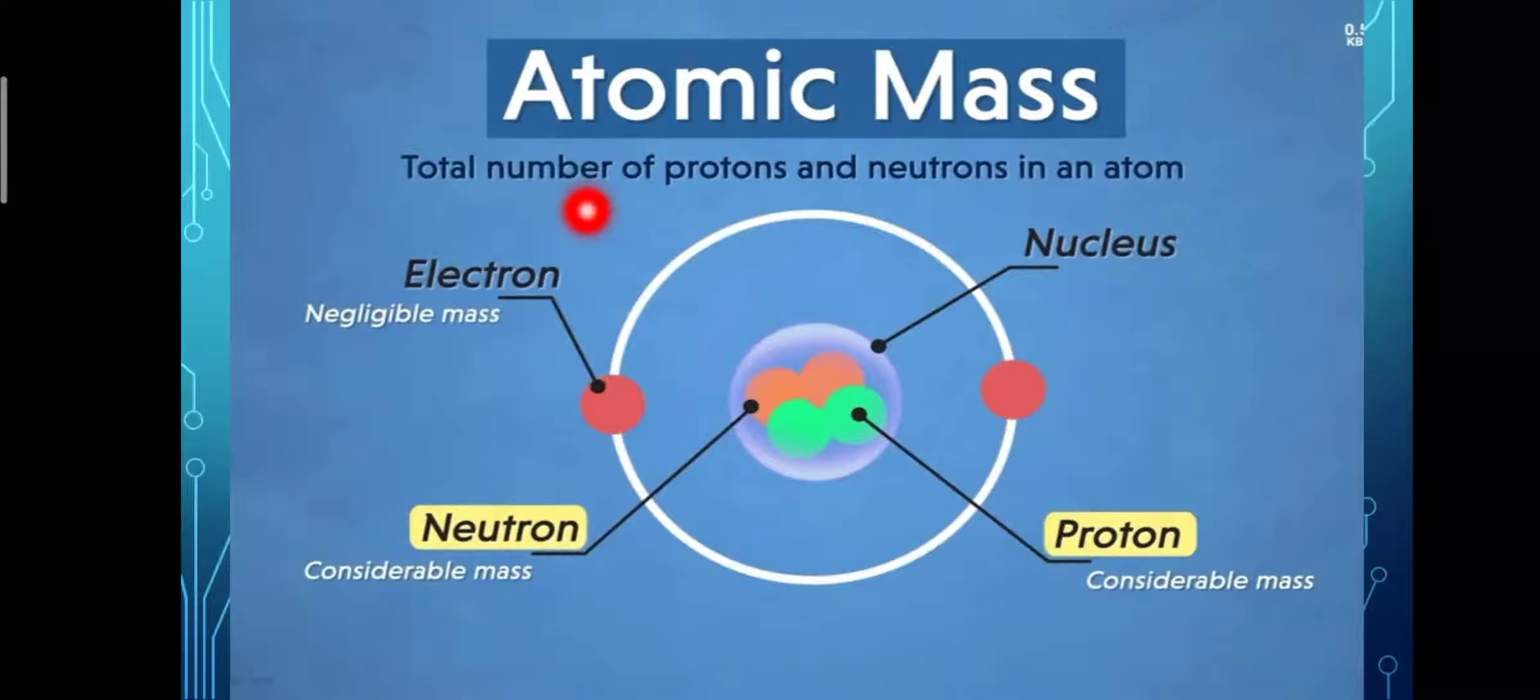Atomic mass is actually the mass of an atom. The mass of electrons is negligible. The considerable mass in an atom is the mass of a neutron and the mass of a proton. One proton is equal to 1836 electrons, and one neutron is equal to 1837 electrons. It means the mass of electron is negligible as compared to the mass of a neutron and proton. So the atomic mass is the total number of protons and neutrons in an atom.